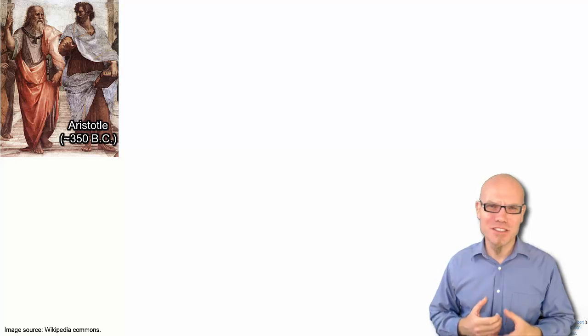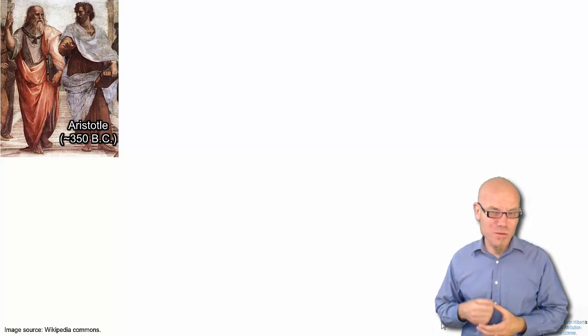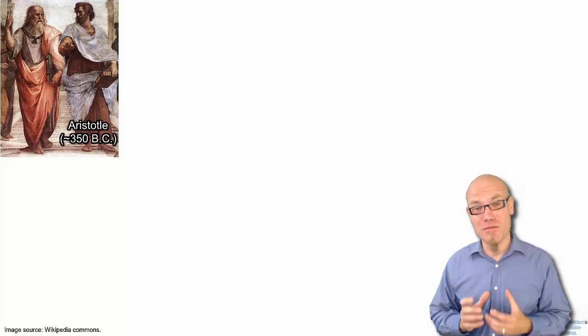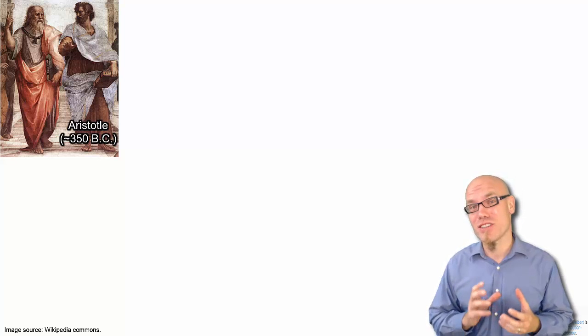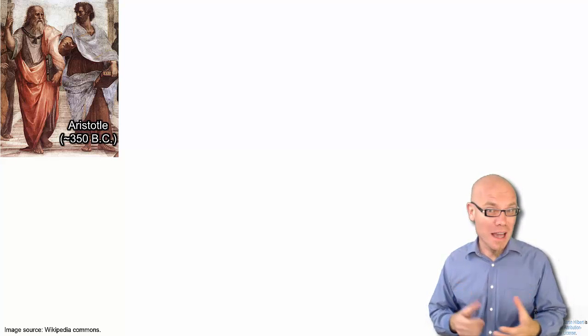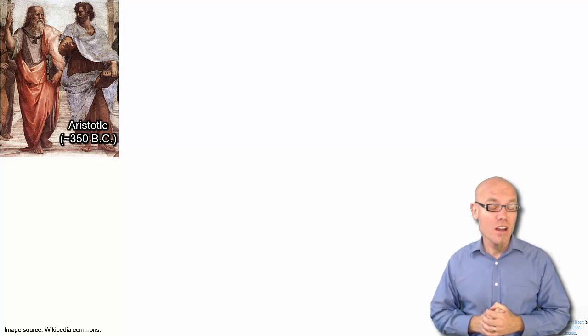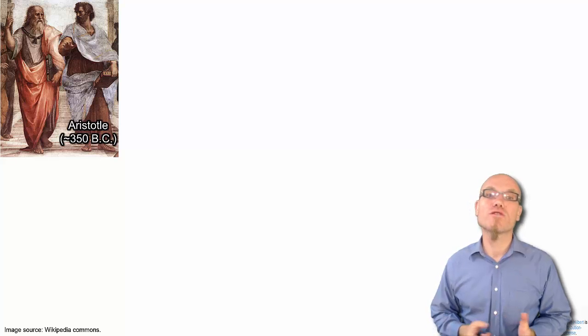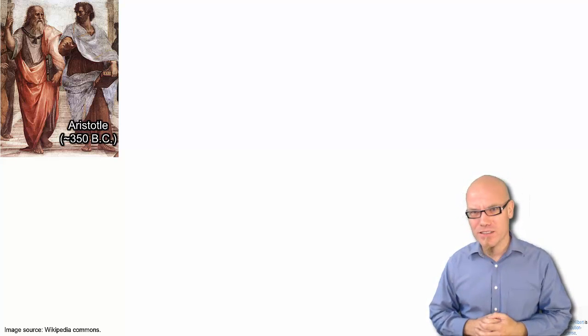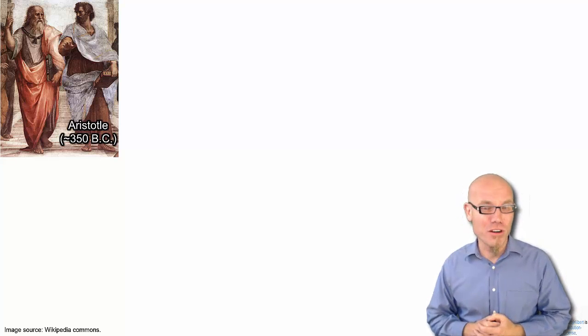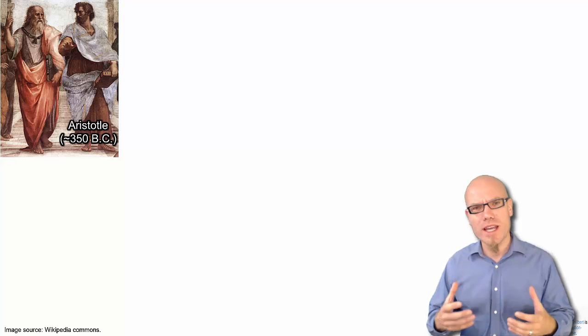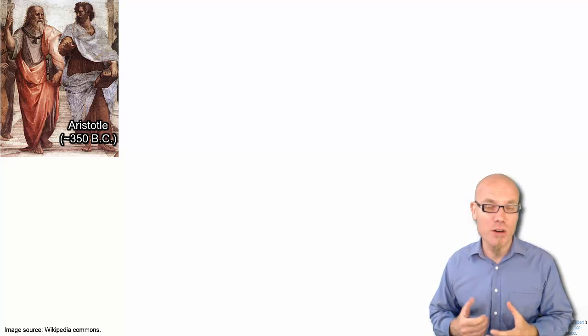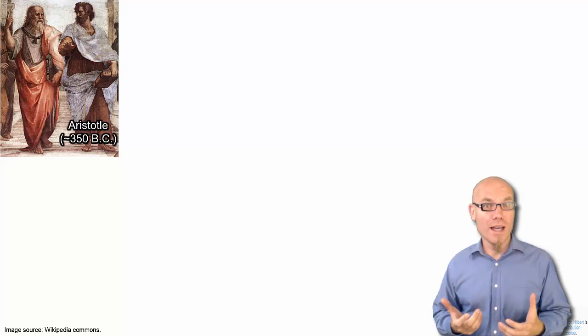Before we get into any more formal theory, let's start with a very simple example to illustrate the importance communication and technological change in communication has on society, on social organizations. For example, at the time of the old Greeks, more than 2000 years ago, 350 years before Christ, Aristotle famously argued that democracy could obviously never be executed beyond a radius of 70 kilometers, about 45 miles.